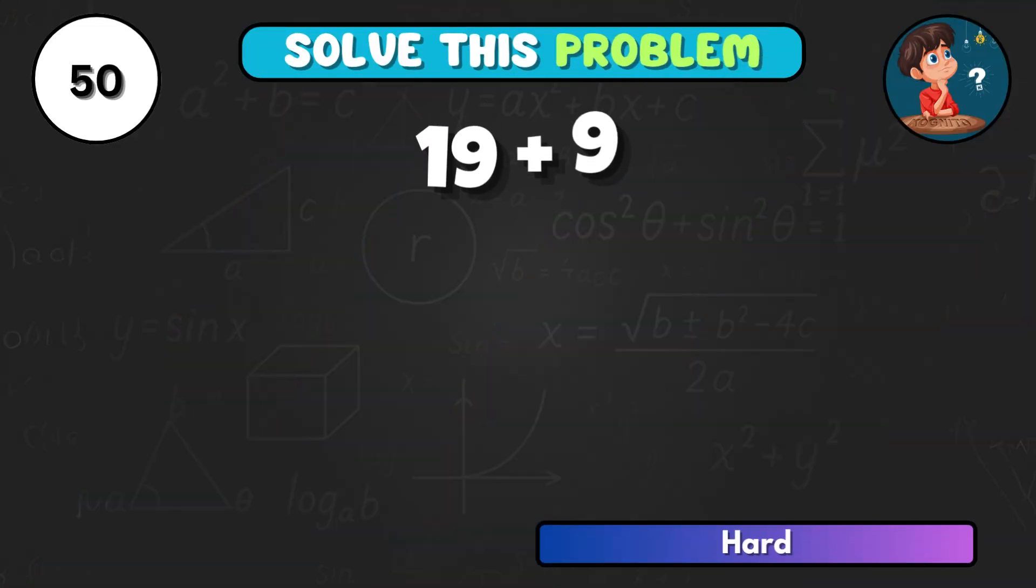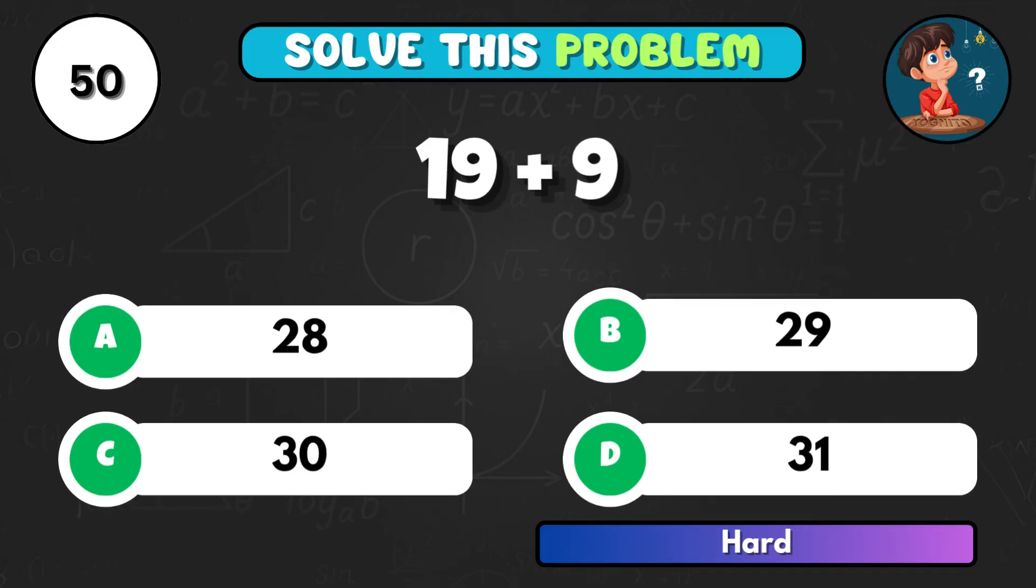And to finish, 19 plus 9, equals what? The answer is A, giving 28.